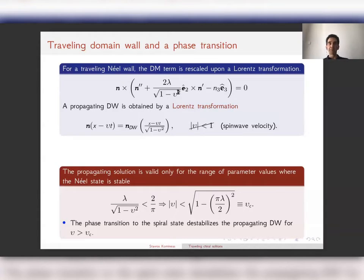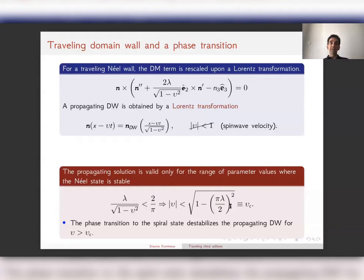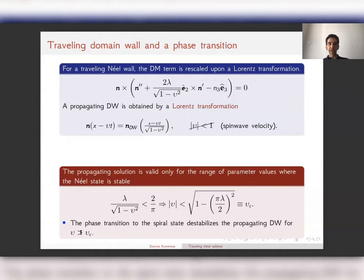Therefore, we impose that λ/√(1 − v²) < 2/π, which means the velocity must be smaller than a critical velocity vc. Above this critical velocity, the Néel state is destabilized and the domain wall is destabilized, giving way to a spiral state. This critical velocity is smaller than unity — the domain wall can never reach the spin wave velocity; it is destabilized before that value.